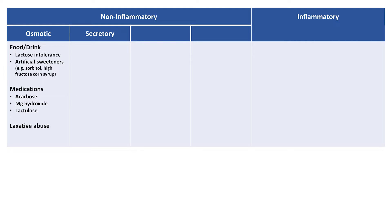Secretory diarrhea is relatively rare and associated with a very high volume of watery stools which continue overnight, a relatively uncommon phenomenon in other forms of diarrhea. In this category is microscopic colitis, a chronic inflammatory disease of the colon of undetermined etiology, but which is thought to be triggered by NSAID use in some cases. A secretory diarrhea can also be a medication side effect, as seen with NSAIDs even without the development of microscopic colitis, and colchicine.